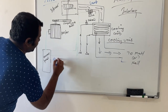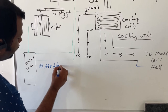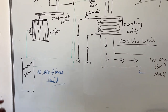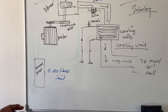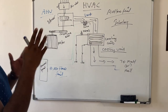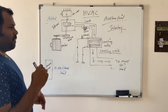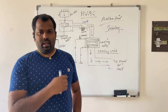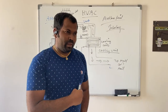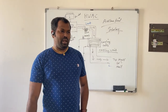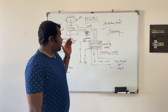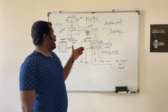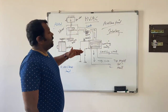There will be an indication on the control panel showing airflow fail. This feedback may also be given to a BMS or any monitoring system. Then maintenance personnel will come, check the problem, solve it, and reset the system.